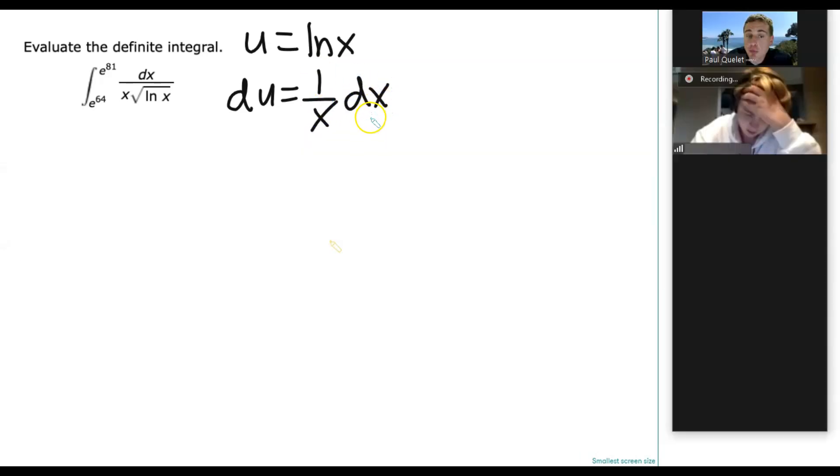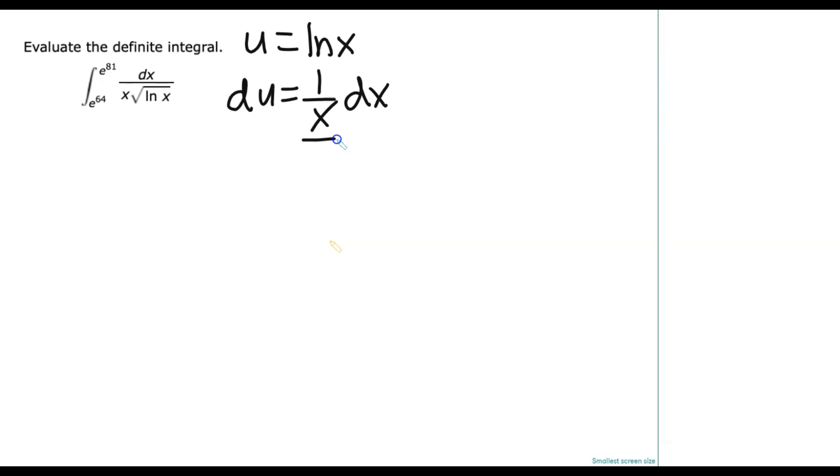Now remember, if it helps you, do the thing that my high school algebra teacher always did. She loved underlining things. 1 over x is this guy, because there's an imaginary 1 up there, right? So du is going to take care of both of those. And then u is exactly ln(x), and that goes in here.